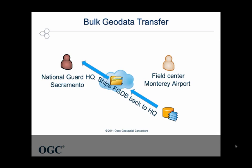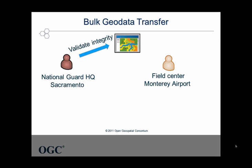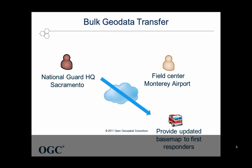The new file geodatabase has been transferred back to headquarters in Sacramento. Lance opens the new file geodatabase and checks the existing stable data to ensure feature coordinates and attributes weren't altered during transmission, during the creation of the Postgres GIS database, or when reloading to a new file geodatabase. He also examines and approves the new changes. The data is then ready to be shipped to any other field centers or to first responders who require the latest basemap data.